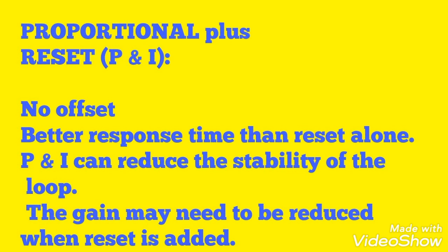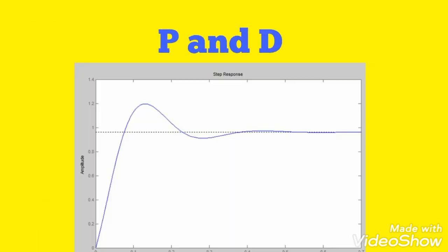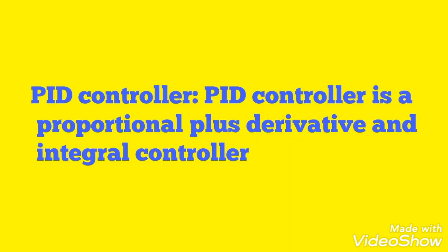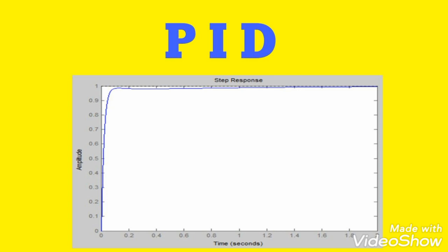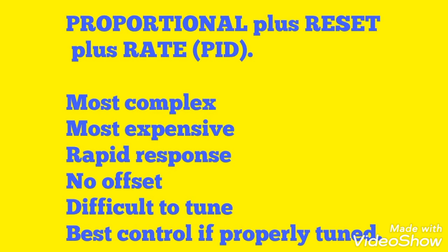For the proportional and derivative signal, there is some variation — less than proportional alone but more than PI, so it is between both. The PID controller uses proportional, integral, and derivative together. With PID, the output is very smooth and variation is almost nil. PID is preferred over PI, PD, or simple P. It has the most complex and expensive design with rapid response, no offset, and is difficult to tune but provides best control if properly tuned.